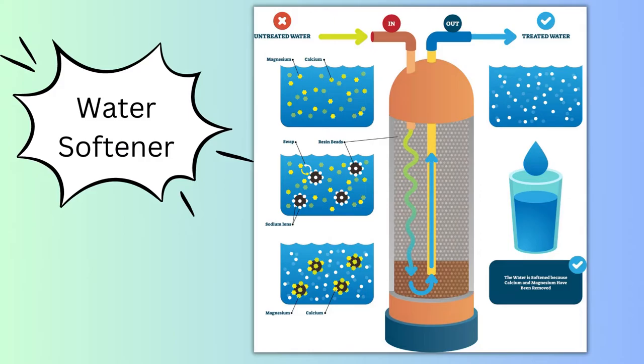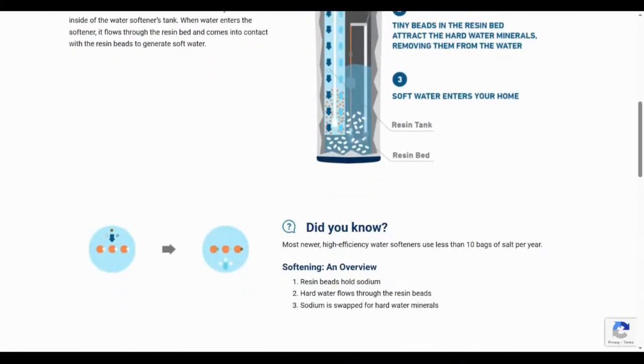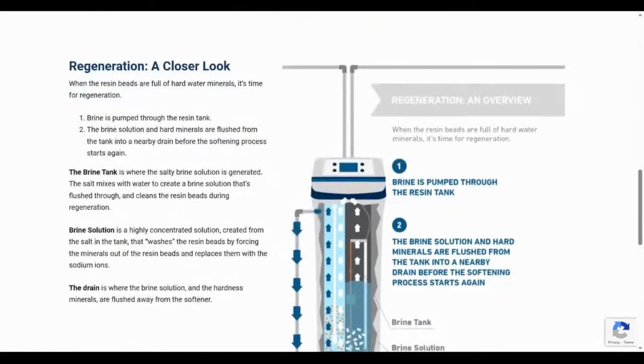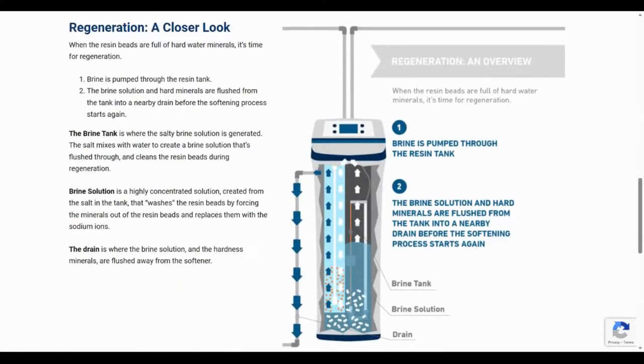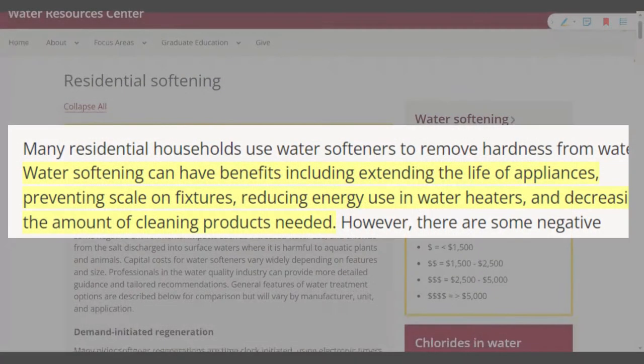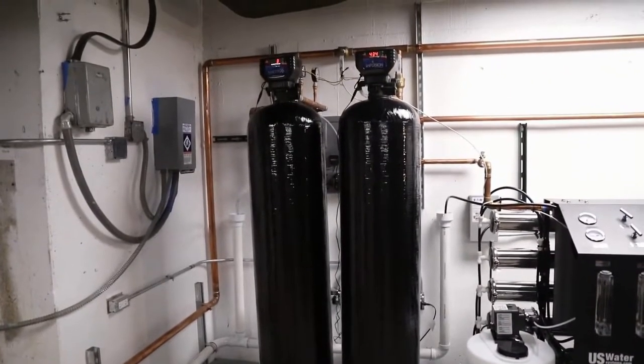Here's where our hero water softeners comes into play. They use ion exchange to attract positively charged hardness ions and exchange them with sodium ions. They can also remove up to 1 ppm of iron and nitrates too. Basically any mineral which is positively charged. They're 100% proven to remove all water hardness from the root. Install it once and enjoy soft water for years to come.